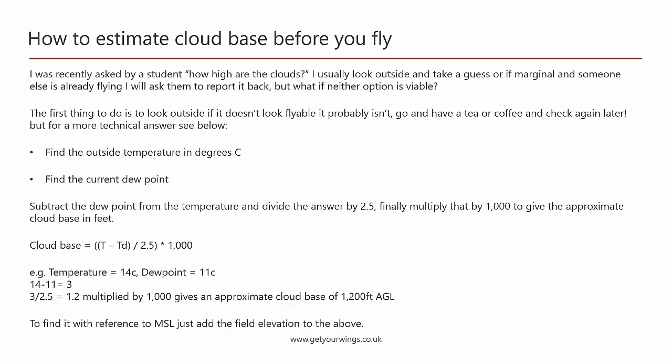Assuming none of those options are available to you, but you do have the outside temperature in degrees C and you know the current dew point, there's a simple mathematical equation to work out the cloud base. That equation is: subtract the dew point from the temperature, divide by 2.5, then multiply by 1000 to give you the estimated cloud base AGL where you currently are. If you want MSL, just add the field elevation. We'll be working through some examples at the end of this video.